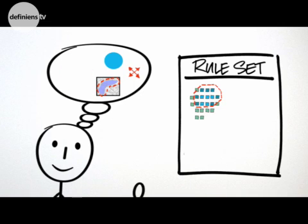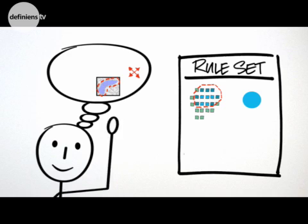Pixels need to be grouped into objects by adding a segmentation algorithm to the process. A classification algorithm assigns all objects with a defined blueness to the class water.